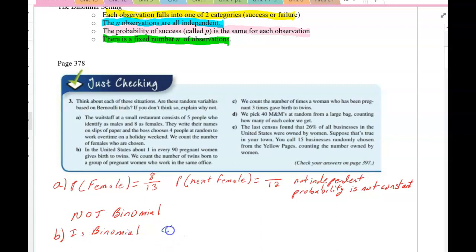Part C, we count the number of times a woman who has been pregnant three times gave birth to twins. This one's a little harder. We have to have some knowledge and we're also not referencing part B. But the probability that someone gives birth to twins increases if they've already had twins. So in letter C, they are not independent.